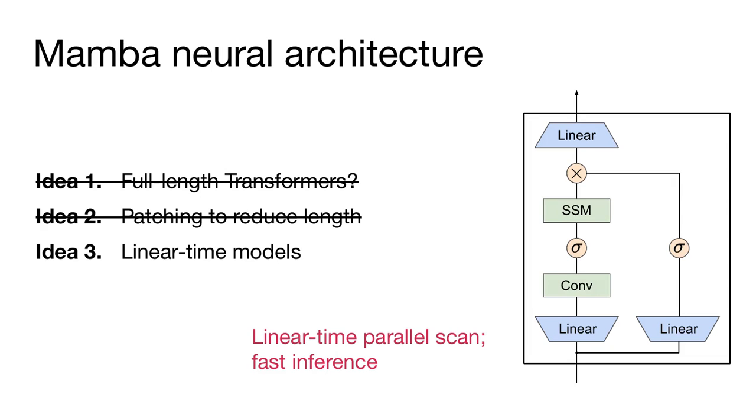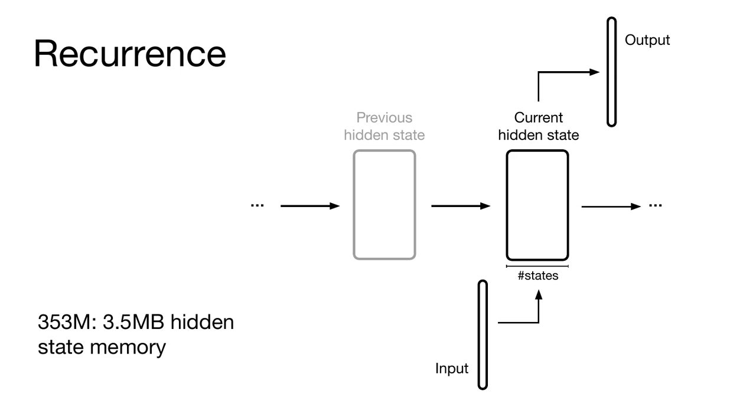The core neural network component of Mamba is shown on the right. The blue shapes represent standard linear layers. They both project up from a lower-dimensional to a higher-dimensional representation. And the conv and SSM components represent linear time operations over the time series of the sequence. These two green components basically replace attention in the model itself. To understand why Mamba may be useful for byte-level language modeling, let's dive a little deeper into how the SSM component works.